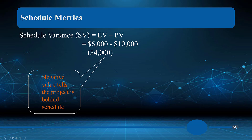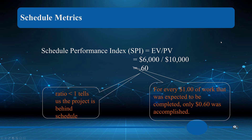Here's the problem with schedule variance: earned value is six thousand, planned value is ten thousand, so we're four thousand under. The issue is we could actually be six months late on the project yet end up saving money on tasks four and five, and thus come out equal even though we're six months behind schedule.